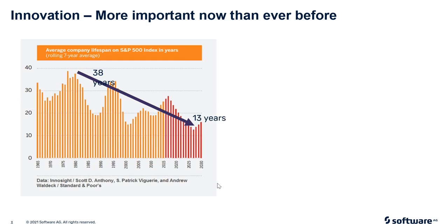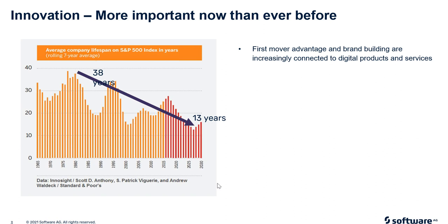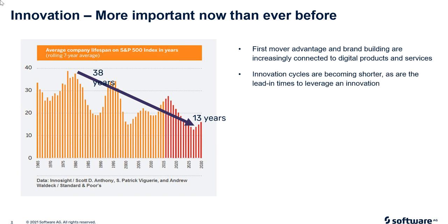That was the inspirational side — the carrot. Now here's more like the stick: why we need to innovate, and why it's more important than ever before. This is a graph showing the average lifespan of a company on the S&P 500. There are many reasons that lifespan is getting shorter — investment life cycles are shrinking and companies simply aren't surviving as long as they used to. We see changes in the market: first-mover advantage and brand building are increasingly associated with digital products and services. Innovations are also coming out in shorter and shorter cycles, with shorter lead times, so we have to be extremely aware of what's going on around us to keep ahead in the market.